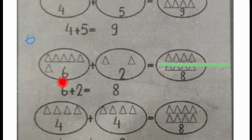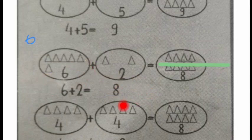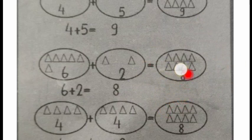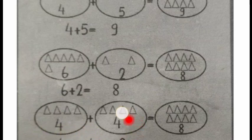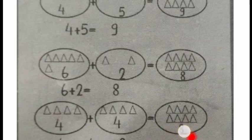The next one: count — one, two, three, four, five; and two here. Total: one, two, three, four, five, six, seven, eight. So six plus two equals eight. The next one: four here, and four here also. Four plus four equals — one, two, three, four, five, six, seven, eight — eight.